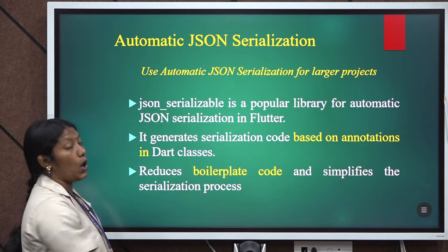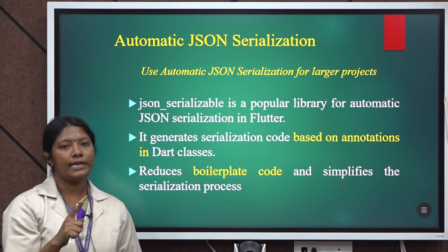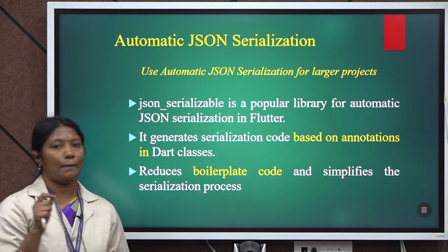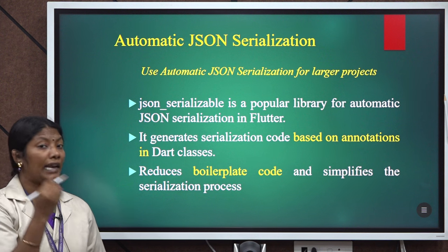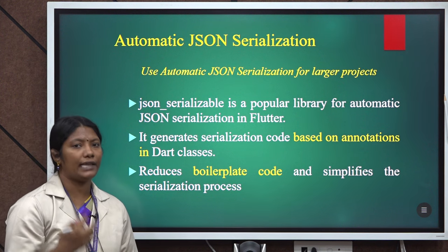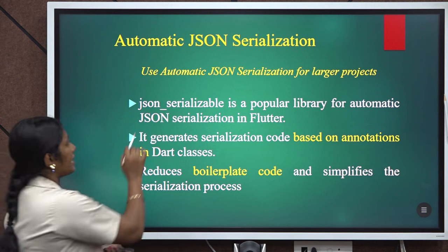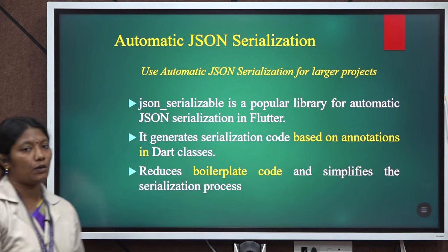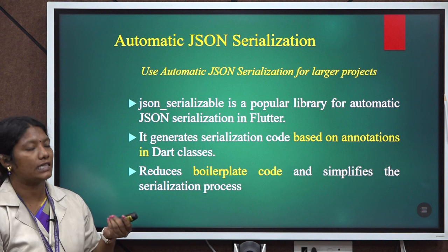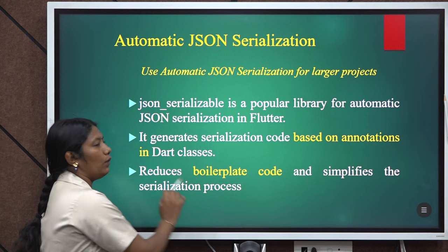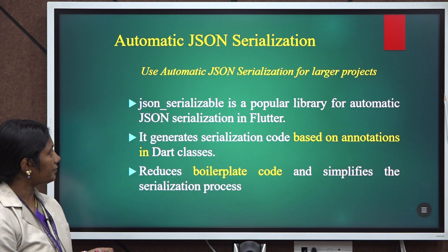Automatic serialization is mainly used for larger projects. We must add two dependencies: one is json_serializable, and the other is build_runner. Serialization code is automatically generated based on the annotations given in the Dart classes. The annotation used is @JsonSerializable, which is a popular library. Using this annotation, it automatically generates serialization code, which simplifies the serialization process and reduces boilerplate code.